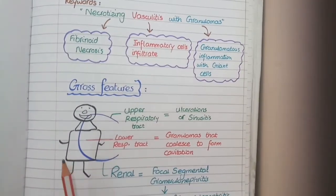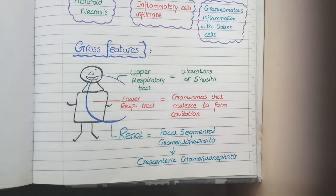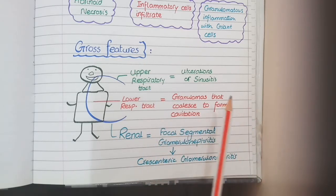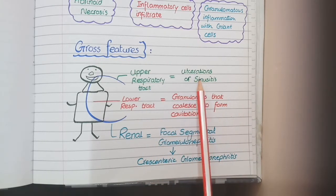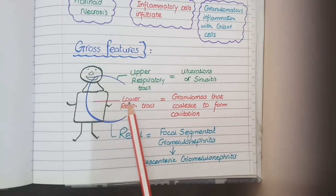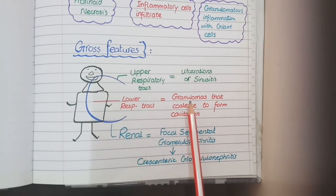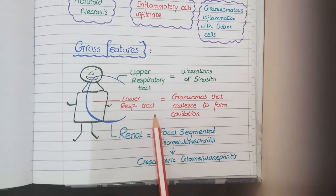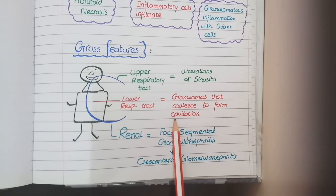For gross features, this picture from Pathoma shows a C-shaped mnemonic diagram. The upper limb of the C passes through the upper respiratory tract, where narrowing of small vessels in Wegener's granulomatosis causes ulceration and sinusitis. The second part of C passes through the lower respiratory tract: granulomas form in the lungs and eventually erode the bronchi. When granulomas cause erosion of bronchi, inflammatory debris enters and exits the bronchi, leading to cavitation in the lungs.